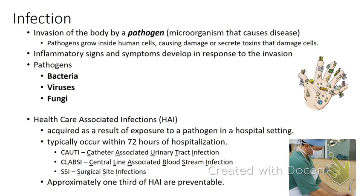You need an immune system because there are pathogens in the world. Pathogens are microorganisms that cause disease. The three most common pathogens are bacteria, viruses, and fungi. You can get infection from bacteria, from viruses, from fungi or yeast or protozoas, but those are the three most common.